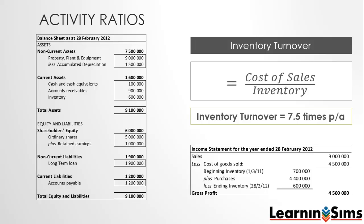This ratio is particularly useful when comparing to other companies in the same industry, and each industry would most likely have its distinctive inventory turnover. For example, retailing companies will have a high inventory turnover, while luxury goods companies will generally have a low inventory turnover.